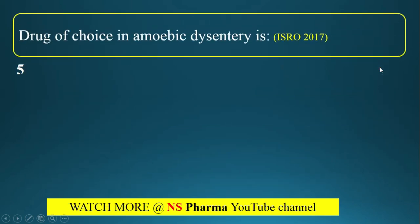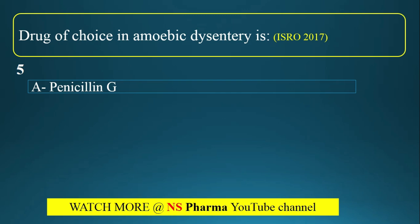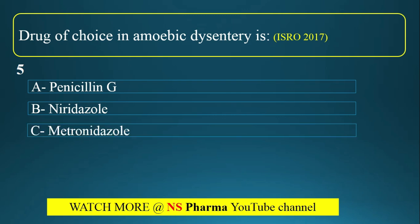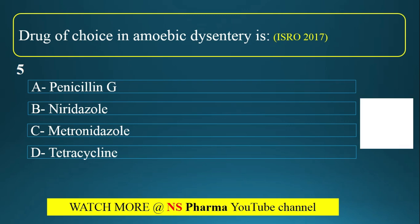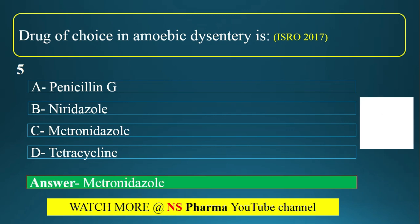Question number 5: Drug of choice in amoebic dysentery is? This is from ISRO Pharmacist 2017. Options are penicillin G, niridazole, metronidazole, tetracycline. The correct answer is Option C — metronidazole. Metronidazole is the drug of choice (DOC) in amoebic dysentery.